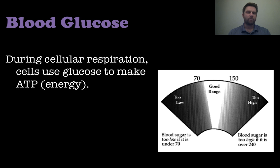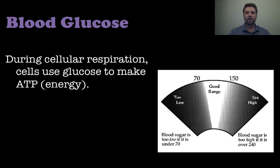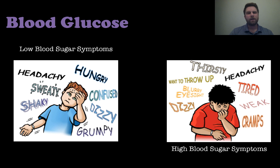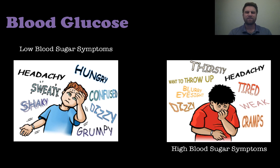Now let's talk about blood glucose. Glucose is a product of cellular respiration — that's how cells make ATP or energy. There's an acceptable range: blood glucose below 70 is less than ideal, over 240 is way too high, and generally you want to be in the 80–120 range. If blood glucose gets too low, you get hungry, headache, confused, sweaty, dizzy, and very weak. When levels get really high, you get very thirsty, dizzy, nauseous, and a general feeling of being sick rather than confused.